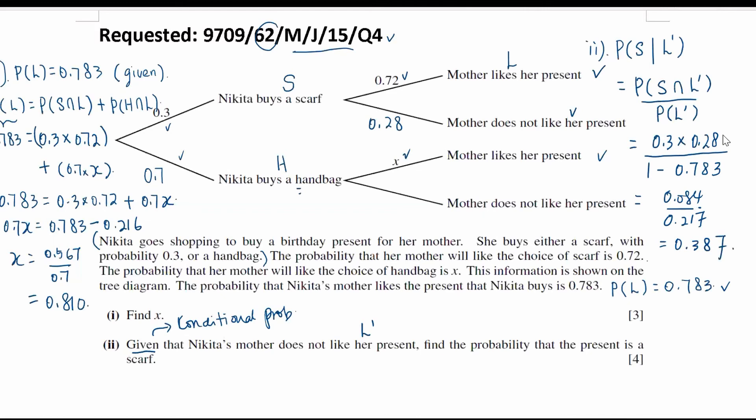And the answer is 0.387. That is how we find out the conditional probability that given her mother does not like her present, and the probability that the present is a scarf. That's all for this video. Bye-bye.